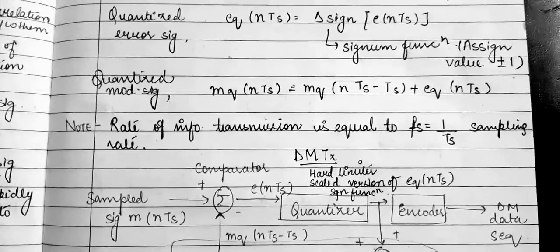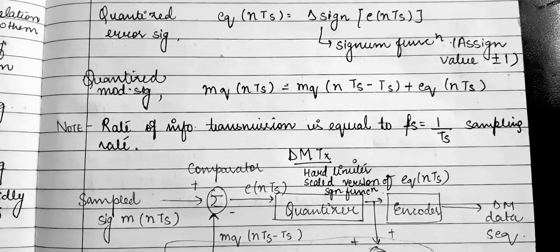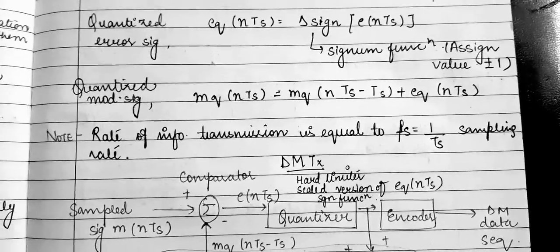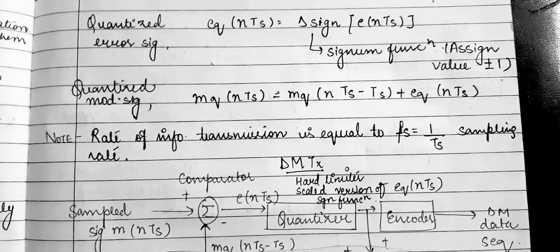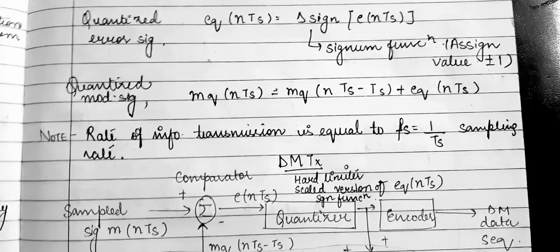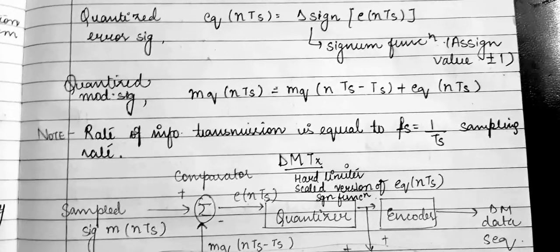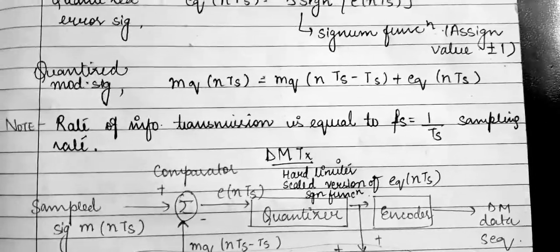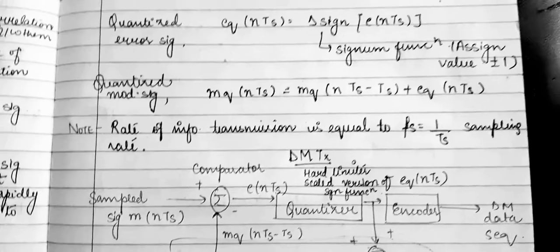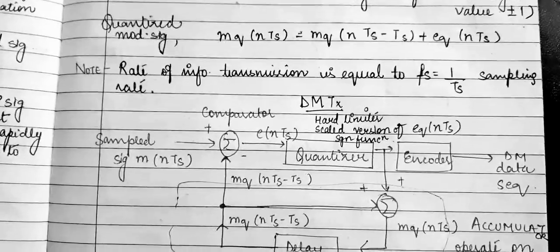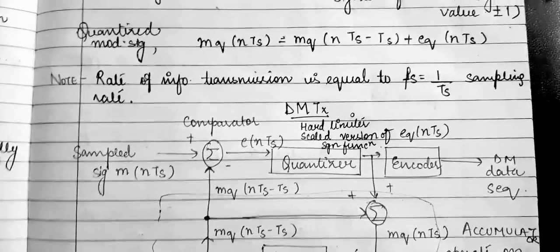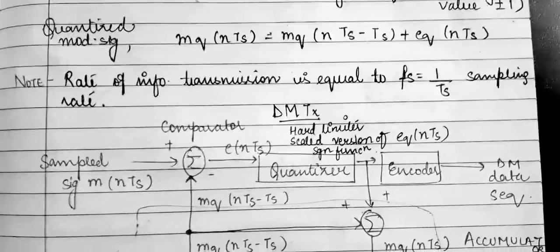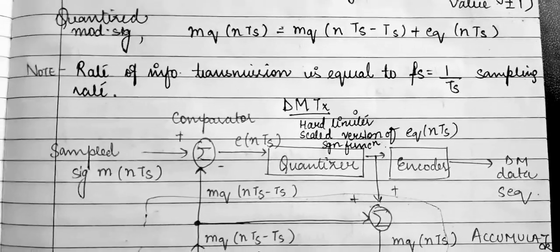After that it is followed by an encoder. We have an accumulator denoted by mq(nTs), followed by a delayed version giving mq(nTs minus Ts). In the accumulator, an adder and a delayed version are used. The accumulator operates on eq(nTs) and produces mq(nTs minus Ts), which is the latest approximation sample version of the modulating signal m(nTs).